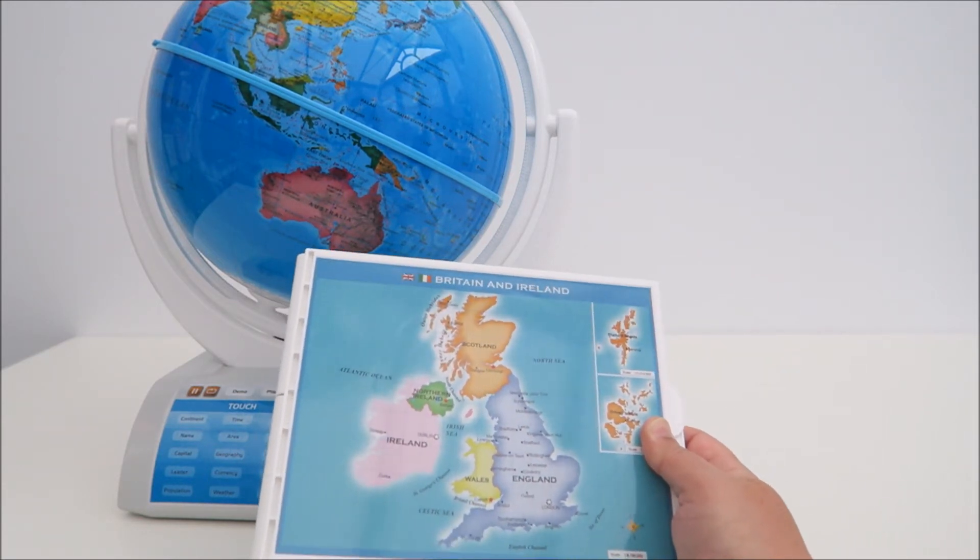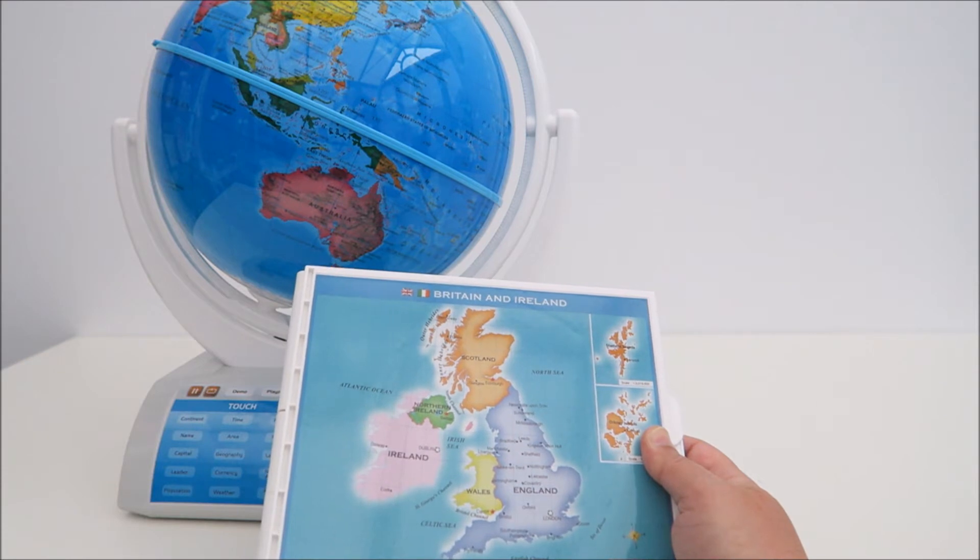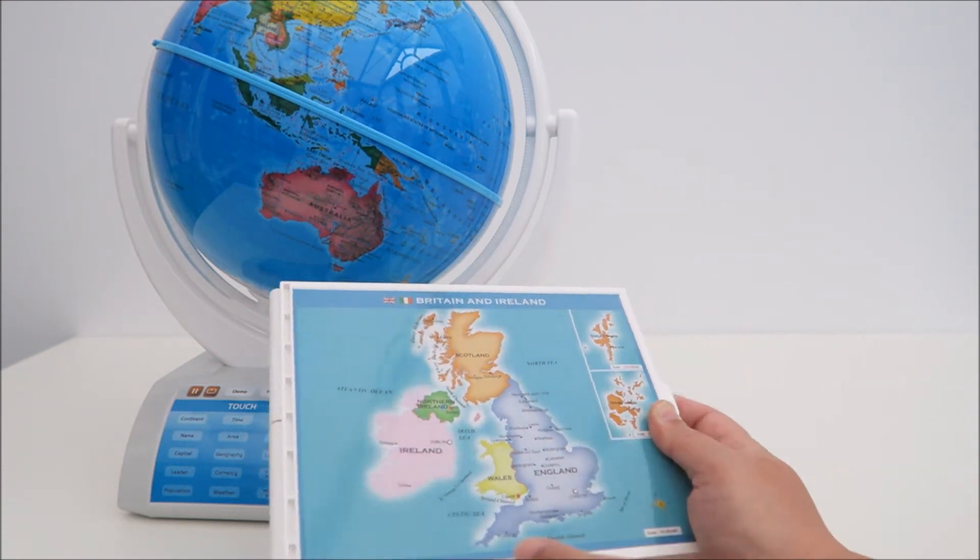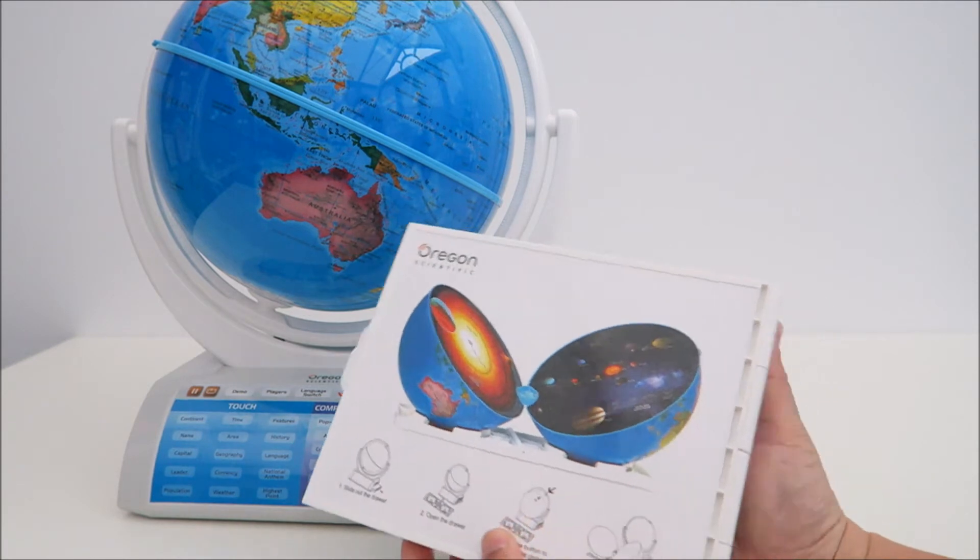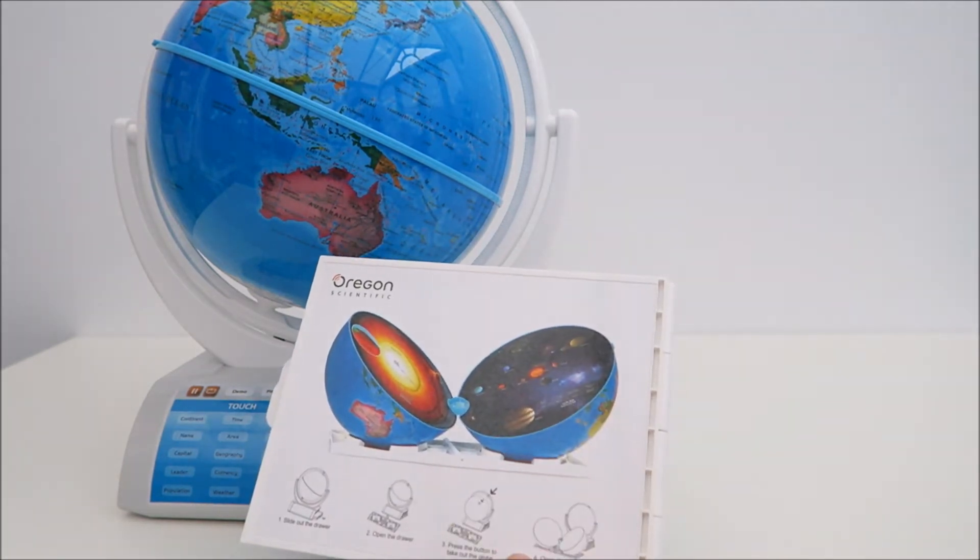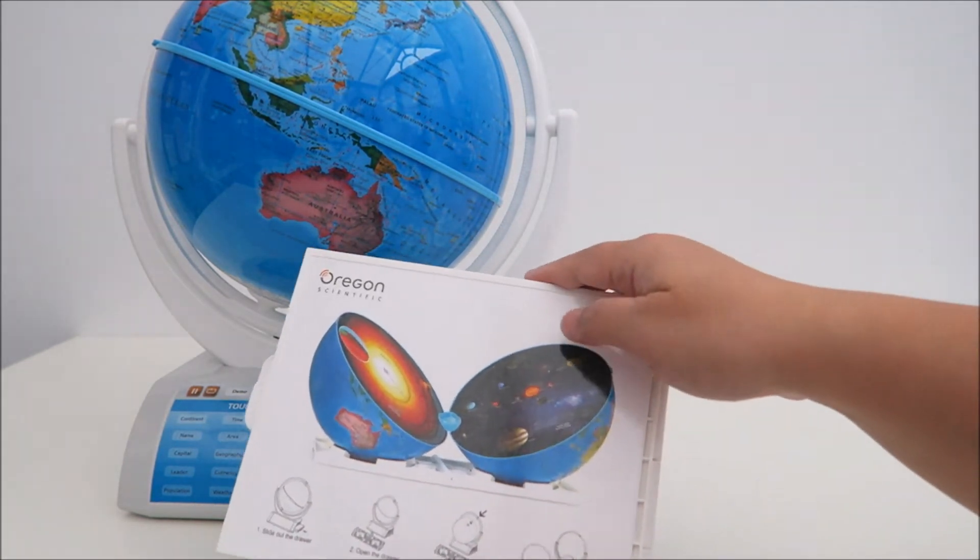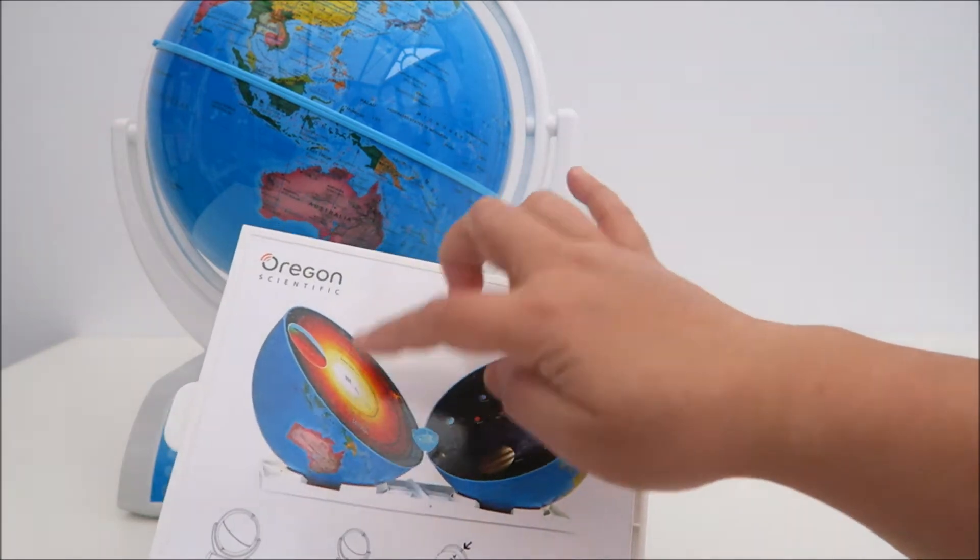This is only valid for UK version smart globe. Turn at the back. It will show you about how you're going to open up the globe for your solar system.